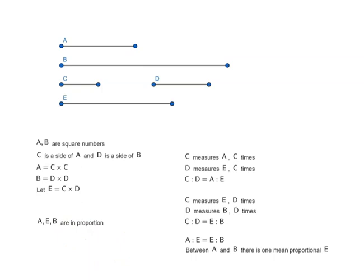we can say that A is to B is equal to A square is to E square. That means the ratio of A to B is equal to the duplicate ratio of A and E.